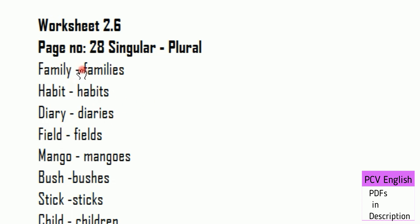For example: Family — drop Y, add I, E, S to make Families. Field. Mango — Mangoes.